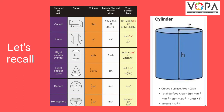A cylinder has radius r and perpendicular height h. Its curved surface area is equal to 2πrh. Total surface area is equal to 2πr(r + h), and volume is equal to πr²h.